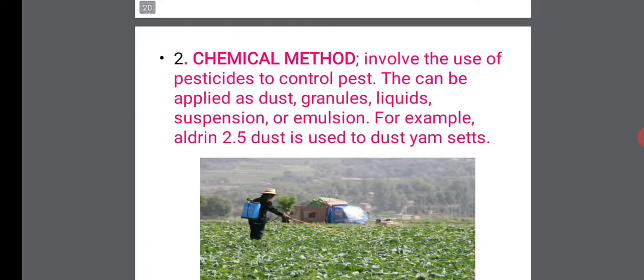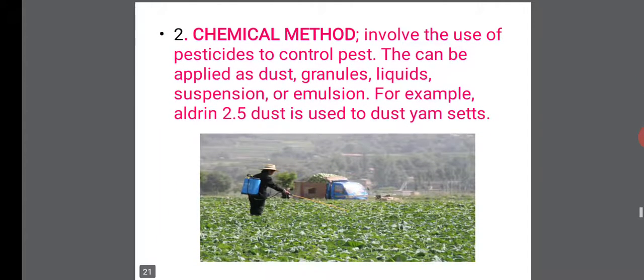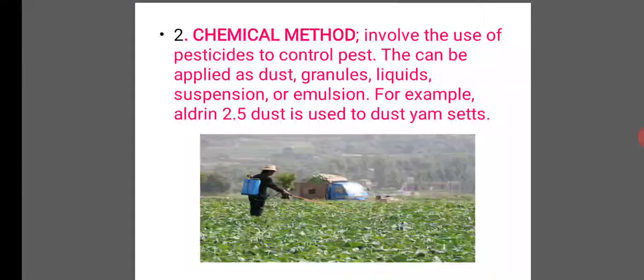Chemical methods involve the use of pesticides to control pests. These can be applied as dusts, granules, liquids, suspension, or emulsion.